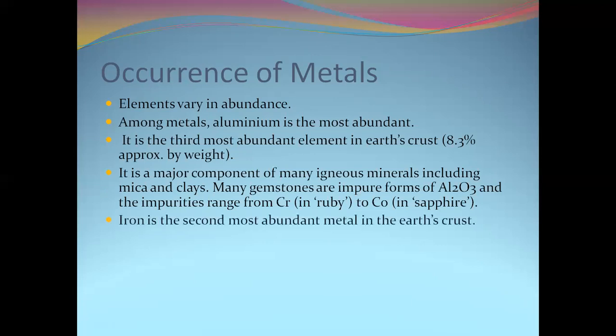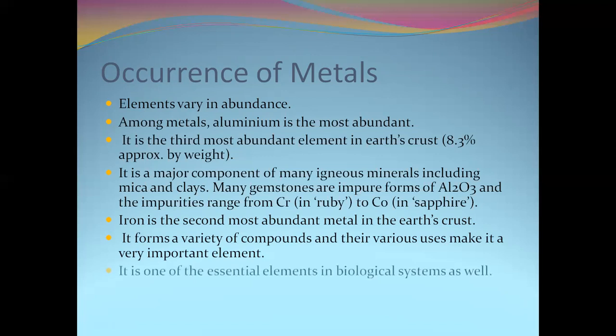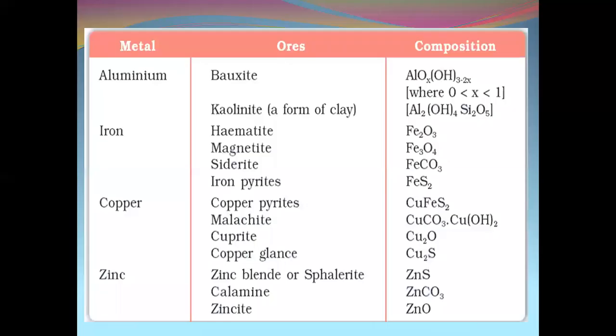Chromium to cobalt. Iron is the second most abundant metal in the earth's crust. It forms a variety of compounds and their various uses make it a very important element. We know that a large number of uses of iron. It is one of the essential elements in biological systems as well. Now you can go for certain metals and whose chief ore and their compositions.